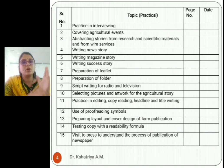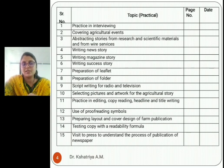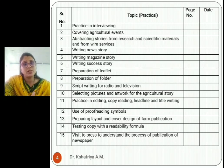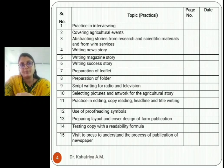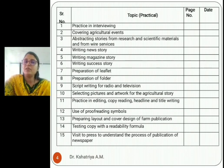The second exercise is covering an agriculture event — if a journalist wants to cover any event to write a news or magazine story, what process and procedure should they follow? The third exercise is abstracting stories from research and scientific materials and from wire services. An abstract is a summary — if there is a two to three page research paper, how do you write a short abstract from that paper?